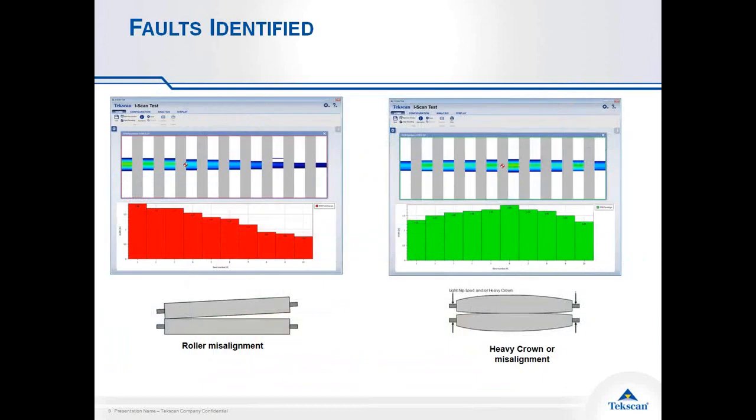Now as we look at some of the faults that we discussed at the beginning of the presentation, you can see the software will give you a clear representation of what kind of fault you're looking at, whether it's the roller misalignment we're showing on the left where we can see the center of force is very much on the left side of that setup, and the operator has a clear indicator of what adjustments need to be made.